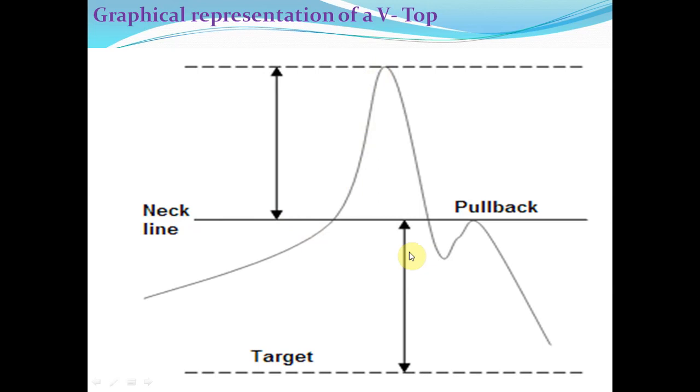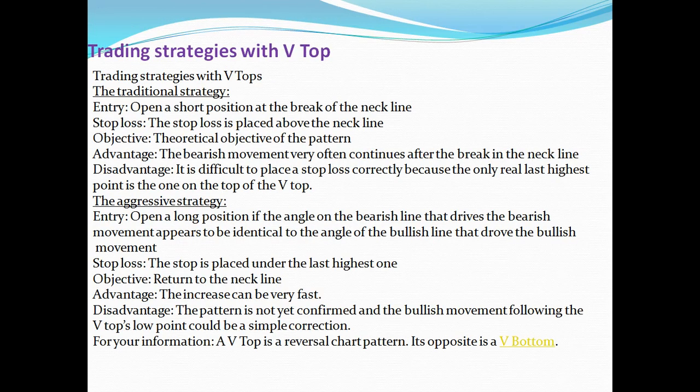Target: as already shown, the target is the same distance from the inverse V to the neckline. You can draw the neckline as a trend line or a support line. The disadvantage of this pattern is that it is difficult to place the stop loss correctly, because the only real last highest point is the one on the top of the V top.